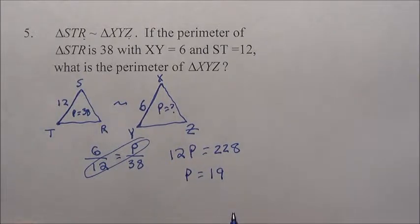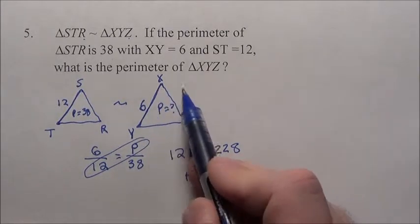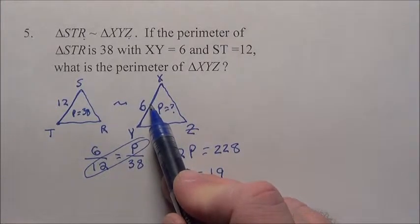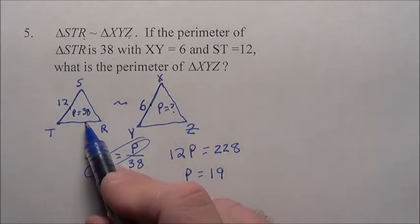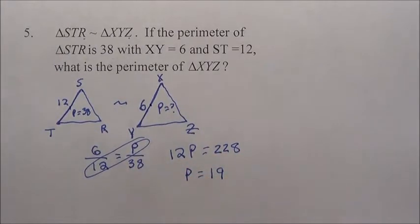So the perimeter will be 19 for this guy, it's going to be half as much, because basically for every 1 inch this guy's side had, this guy was twice as much. We doubled him up, he was much larger, or we started with him and shrunk him by half as much. Either way you want to look at it, it's all the same. So problem 5, the perimeter of triangle XYZ is 19.